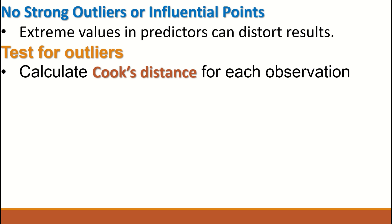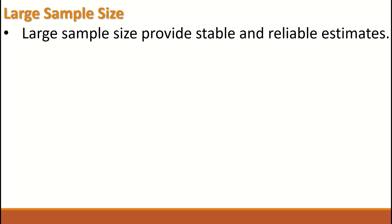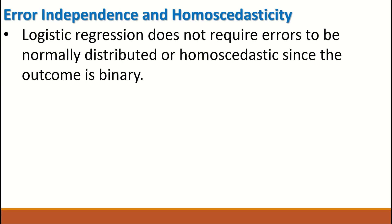The sixth assumption is that the sample size has to be large. Large sample size provides stable and reliable estimates. Binary logistic regression does not require errors to be normally distributed or homoscedastic since the outcome is binary. This is different from linear regression or multiple linear regression. There is no need for error independence and homoscedasticity.